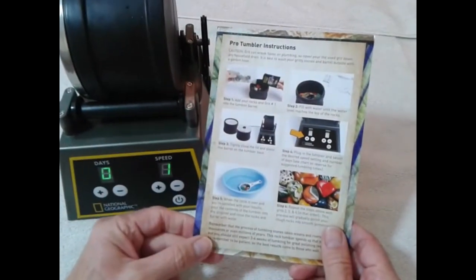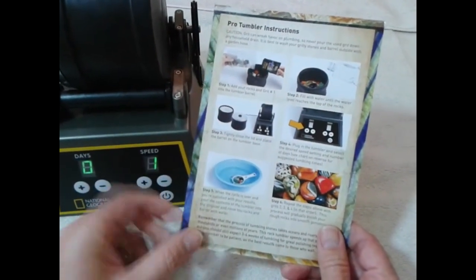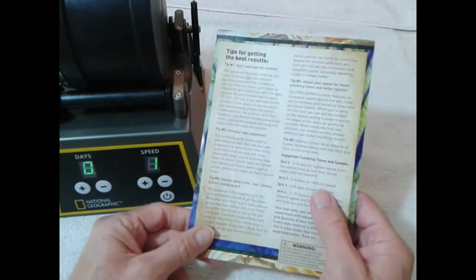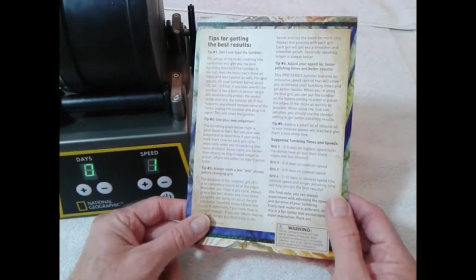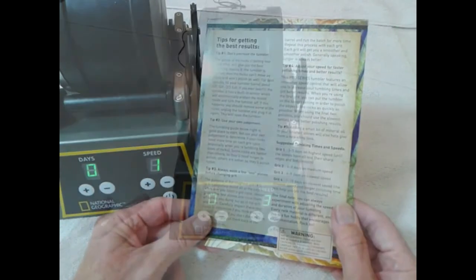If you look at the guide here, it gives you ideas on how long you should set the unit to run for. Under tip five, it suggests that using grit one, I should let it go three to five days on the highest speed.